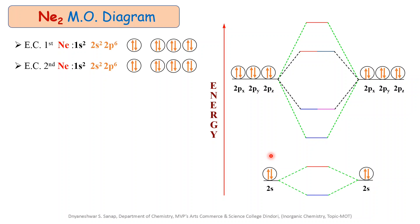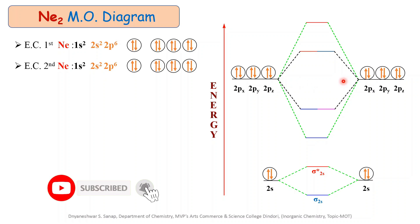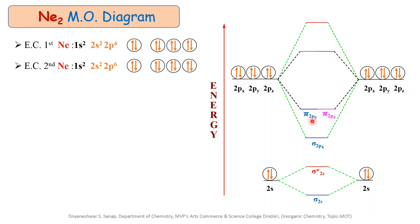Out of these 8 molecular orbitals, 4 molecular orbitals are bonding molecular orbitals and 4 molecular orbitals are antibonding molecular orbitals. When 2s atomic orbitals combine together, they produce a lower energy sigma 2s bonding molecular orbital and a higher energy sigma star 2s antibonding molecular orbital. Similarly, when 2p atomic orbitals combine together, they produce a lower energy sigma 2px bonding molecular orbital, slightly higher energy pi 2py and pi 2pz degenerate pi molecular orbitals, higher energy pi star 2py and pi star 2pz antibonding molecular orbitals, and lastly the highest energy sigma star 2px antibonding molecular orbital.